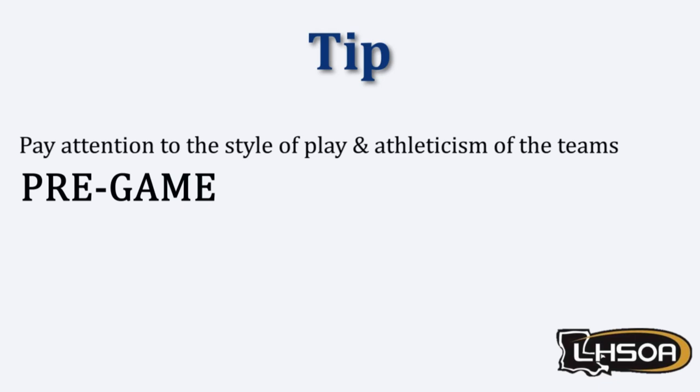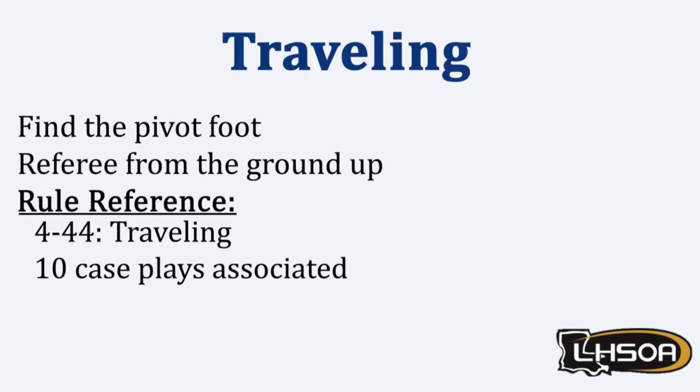The last thing we will discuss is traveling — but more specifically the ones everyone in the gym thinks are travels but are not. In order to correctly call a traveling violation, we first must find the pivot foot and referee from the ground up. Rule 4-44 covers what players can do when a player has both feet on the floor, when they catch the ball mid-air, what they can do once they come to a stop, and what a player who is just holding the ball can and cannot do. Rule 4-44 and the 10 case plays associated with it can help you out tremendously to not only correctly call a traveling violation, but also to gain confidence when the entire gym thinks it's a travel. Let's watch a few clips on this topic.